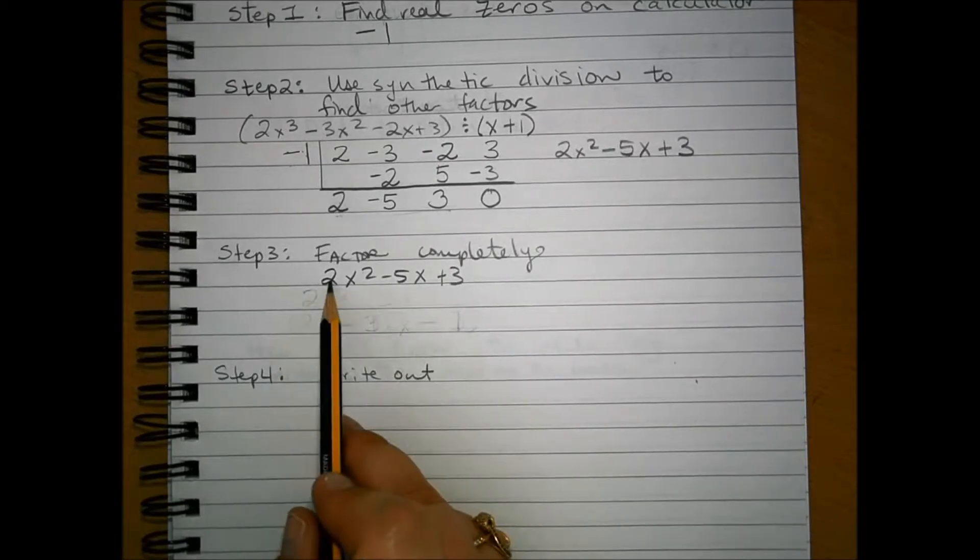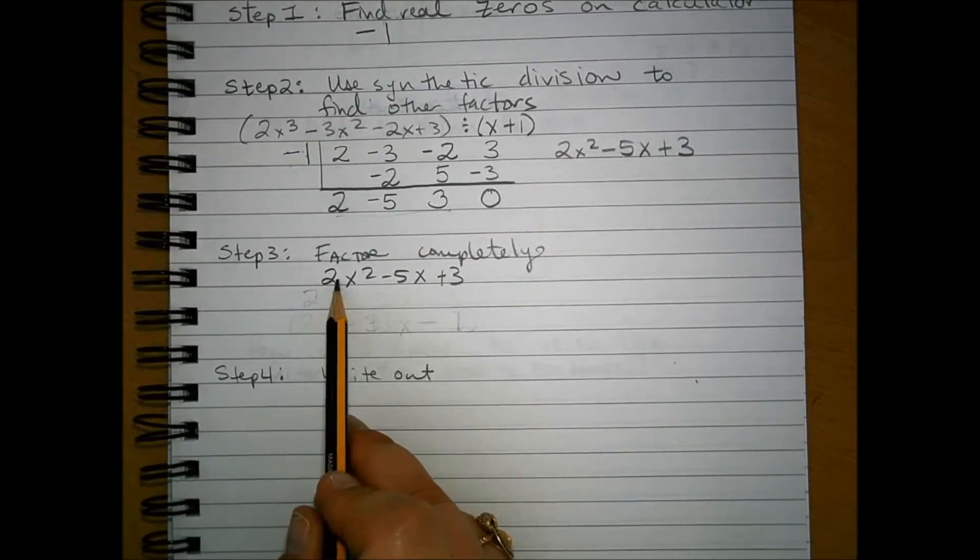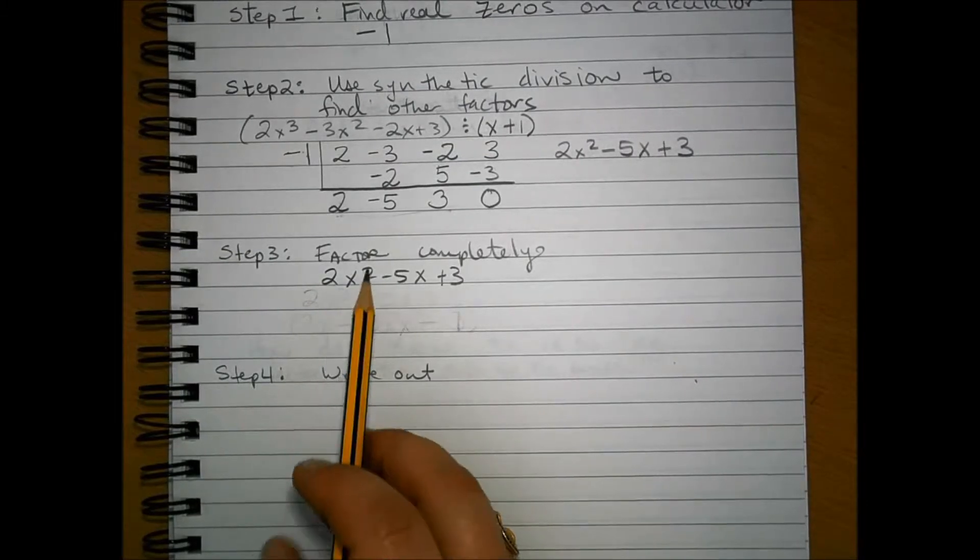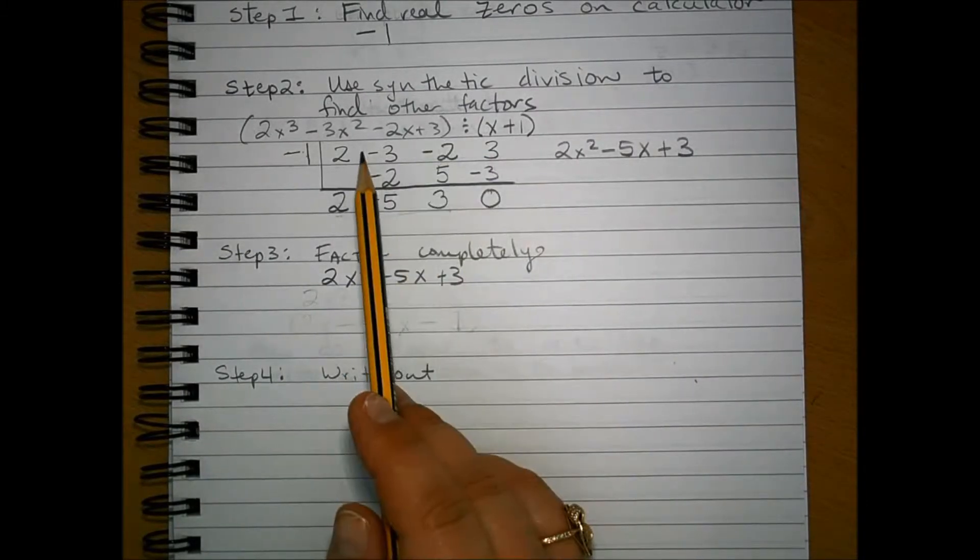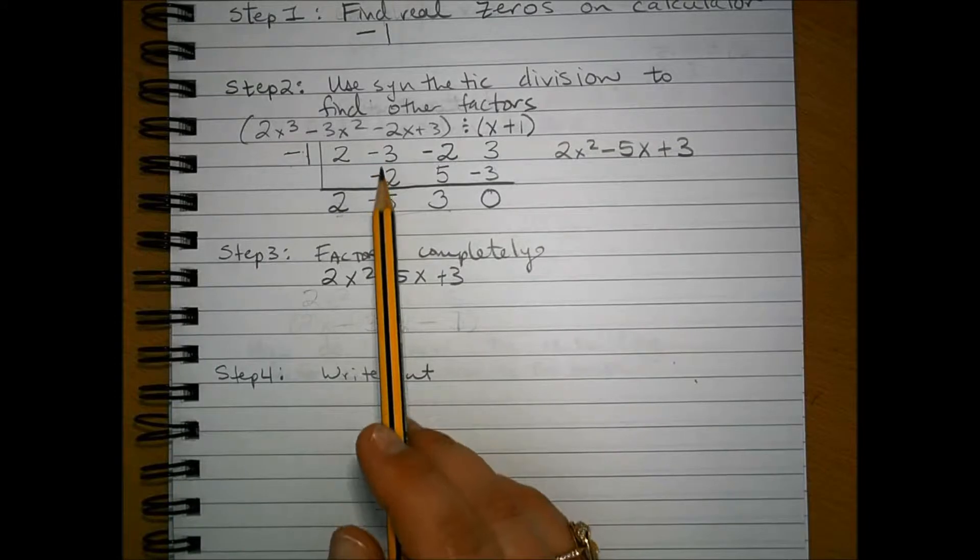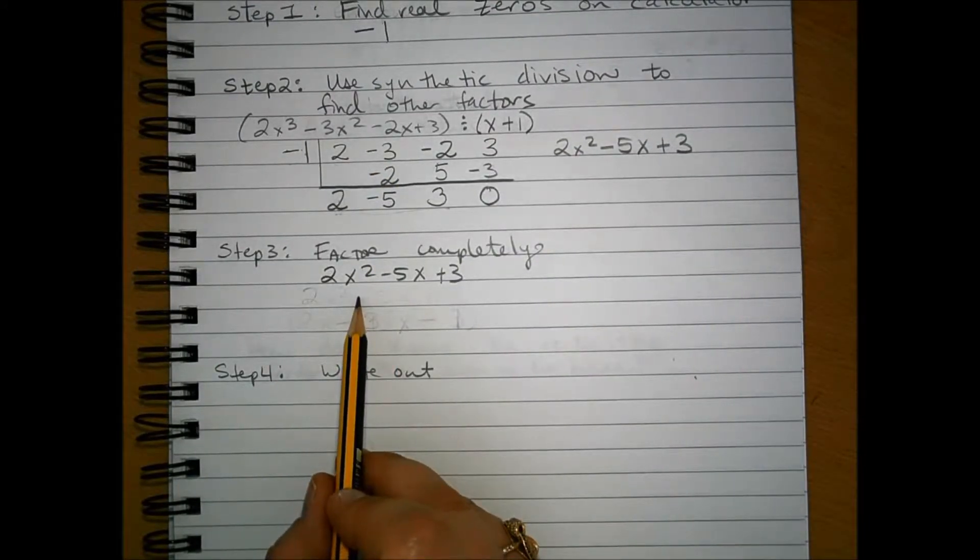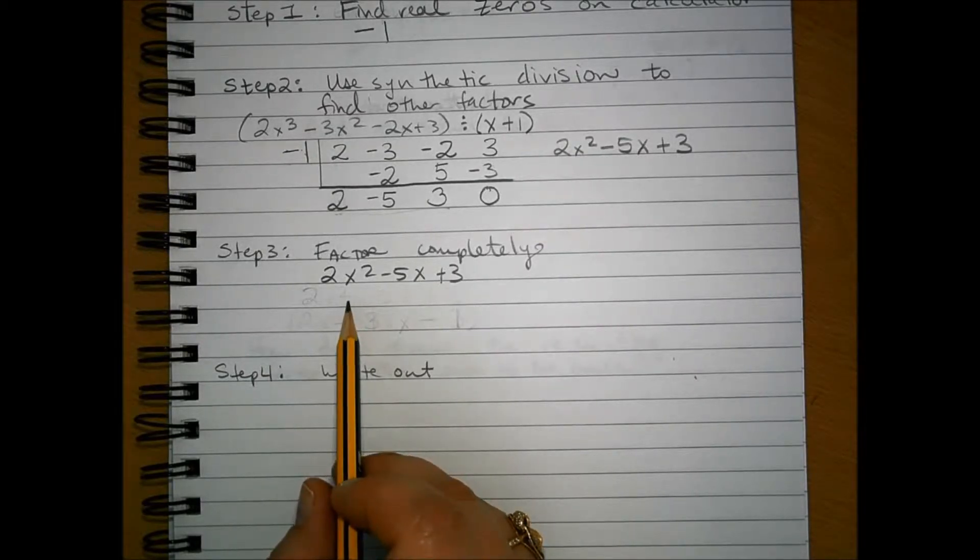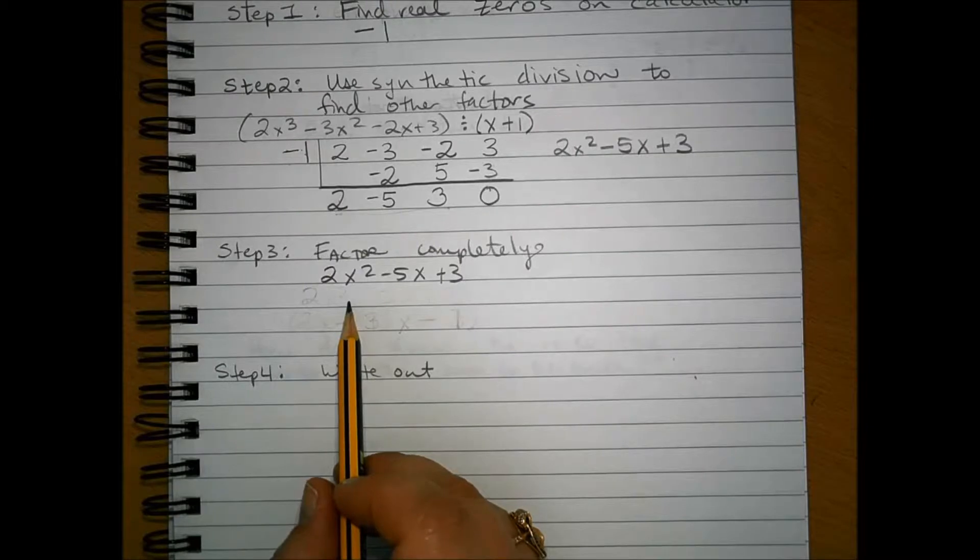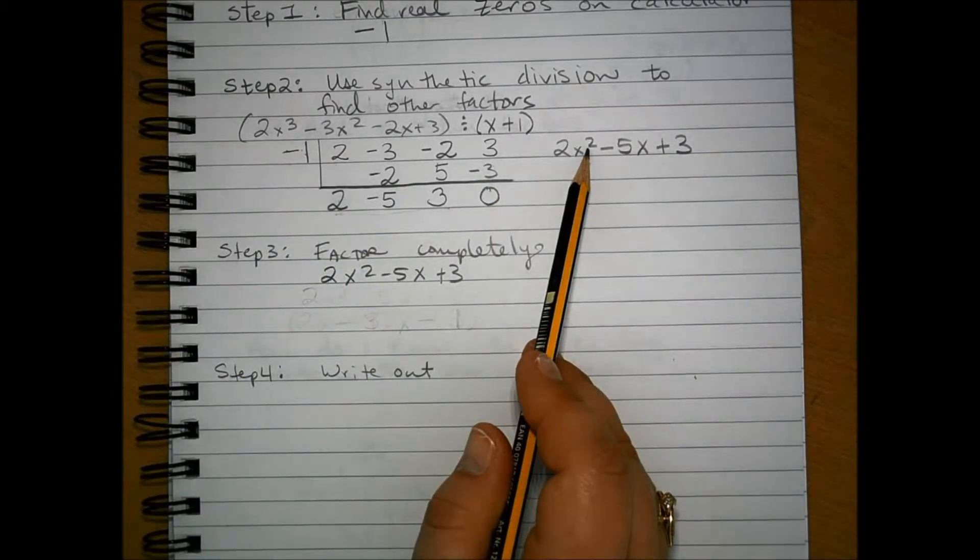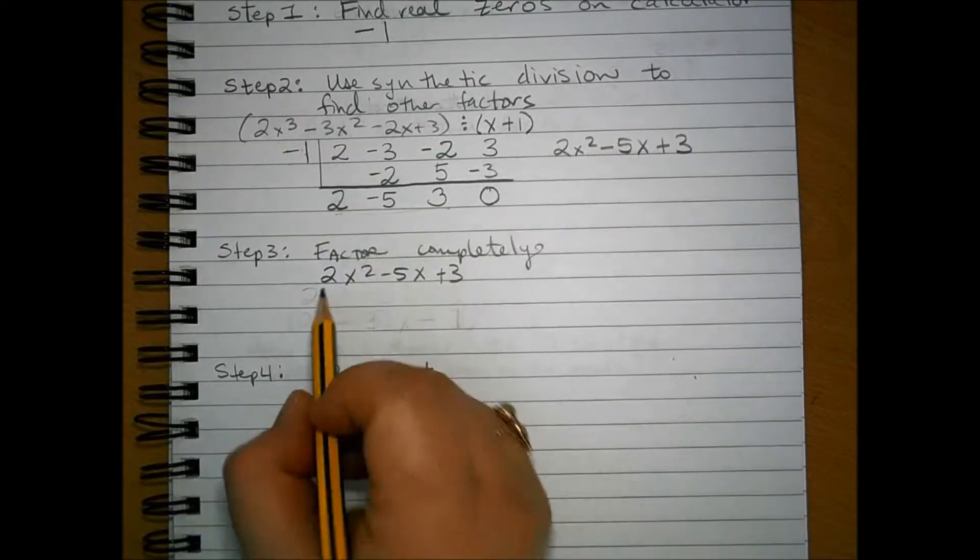In step number 3, we want to factor completely. That means that the factor, the resulting factor of dividing one of the factors by the original polynomial in step number 2, is going to give us a factor. And we want to make sure that we can continue to factor this. What tells me that probably we're going to be able to factor more is we have a cubic here, we get a quadratic here, and most likely it's going to be factorable.